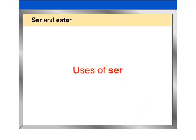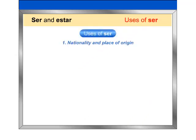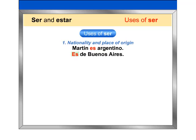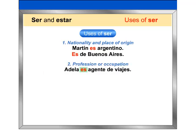Uses of ser. 1. Nationality and place of origin: Martín es argentino. Es de Buenos Aires. 2. Profession or occupation: Adela es agente de viajes. Francisco es médico.